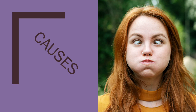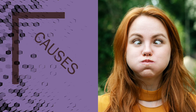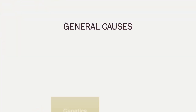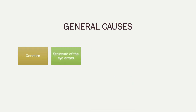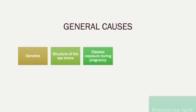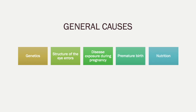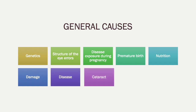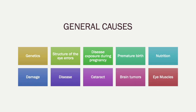Now let's move on to the causes. One little secret: crossing your eyes is not a cause of a visual impairment and your eyes will not be stuck like that — I know we were all told that as children, but it is not a cause. Causes of visual impairments include genetics, issues with eye structures, disease exposure during pregnancy such as measles, premature birth, nutritional deficits such as a vitamin A deficiency, damage to the eye structures, diseases such as glaucoma, cataracts, brain tumors, or eye muscle issues.